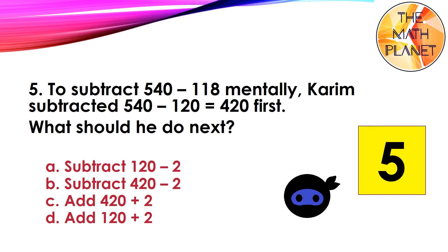Question 5. To subtract 540 minus 118 mentally, Kareem subtracted 540 minus 120 equals 420 first. What should he do next?